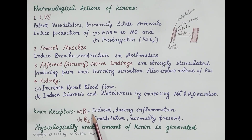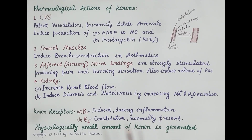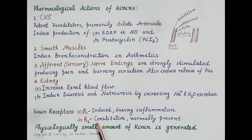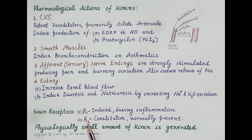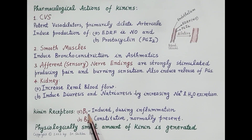There are two types of kinin receptors: B1 and B2. B1 receptors are induced and expressed only during inflammation, so B1 receptors are responsible for chronic inflammation and pain. B2 receptors are constitutive — the normal physiological actions of kinins are produced by activation of B2 receptors, since physiologically only small amounts of kinin are generated. During inflammation, large quantities of kinins are generated, B1 receptors are induced, and kinins produce their actions by stimulating B1 receptors, causing chronic inflammation and pain.